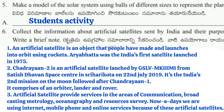Question five: Make a model of the solar system using balls of different sizes to represent the planets — this is a student activity. Question six: Collect information about artificial satellites sent by India and their purpose. First point: An artificial satellite is an object that people have made and launched into orbit using rockets. Aryabhatta was India's first satellite, launched in 1975. Second point: Chandrayaan-2 is an artificial satellite launched by GSLV Mark III from Satish Dhawan Space Centre in Sriharikota on 22nd July 2019.